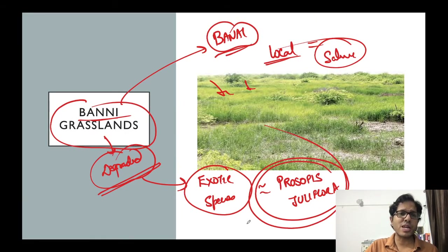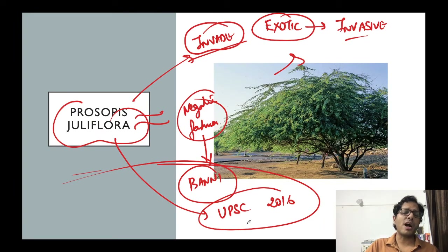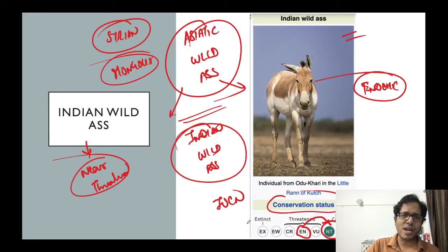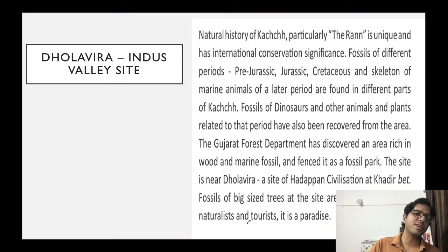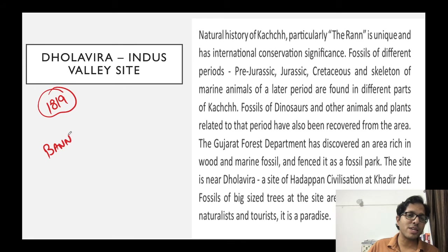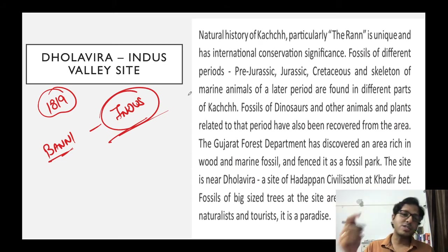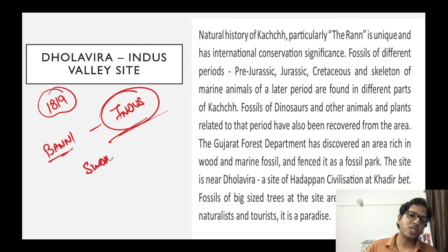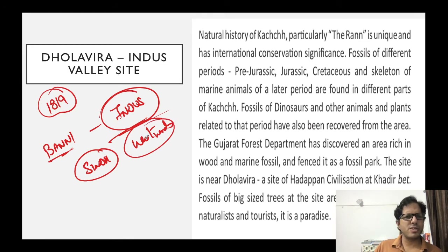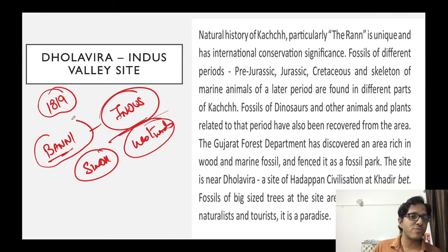Regarding Banni Grasslands - there is a famous story that around 1819, an earthquake occurred. Before that, locals say the Indus River used to flow through the Banni Grasslands and fall into the Arabian Sea. This earthquake shifted the course of the Indus westward towards Sindh. The sprawling nature of the Banni Grasslands suggests it was a water-rich region.